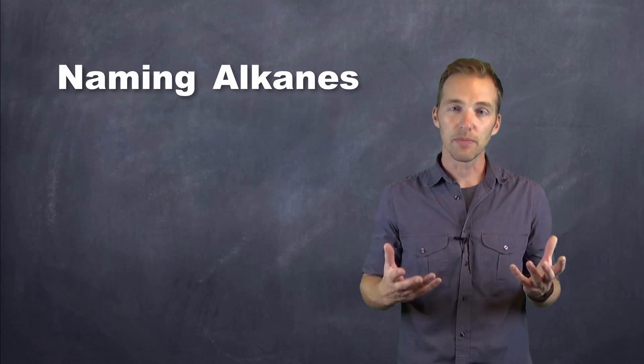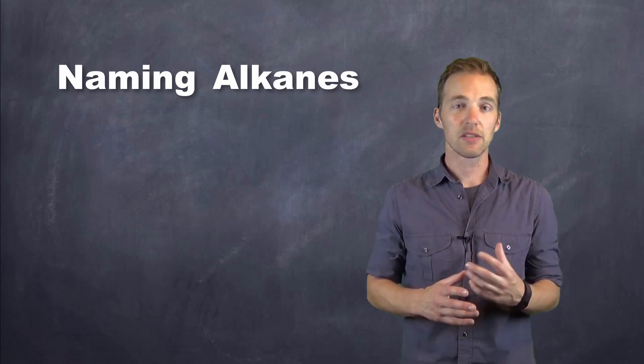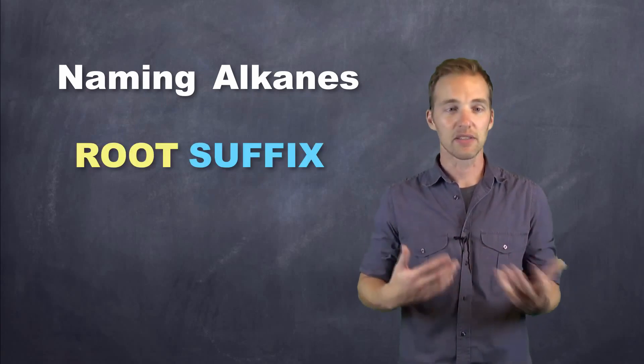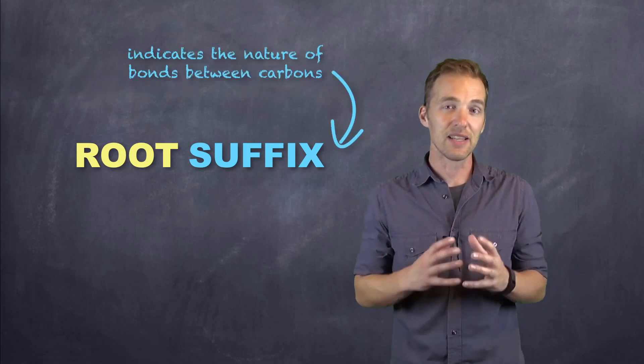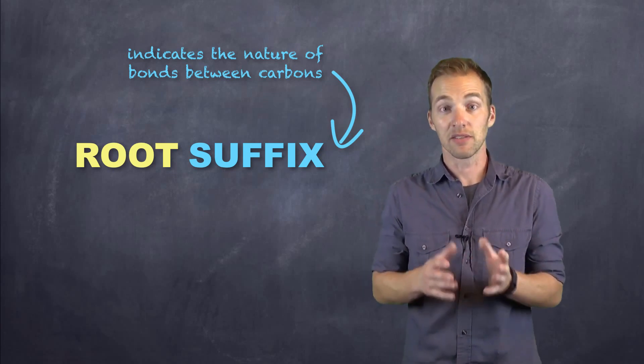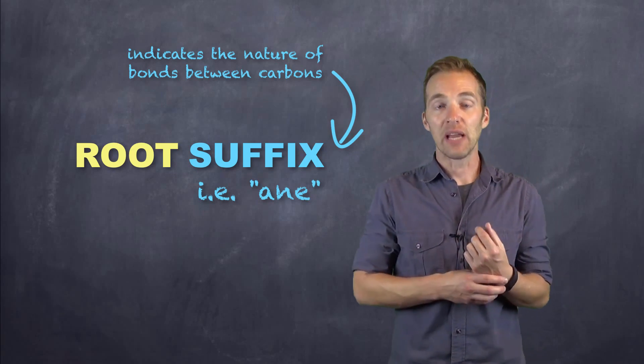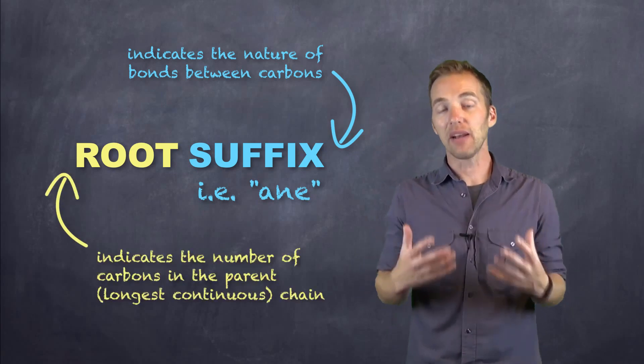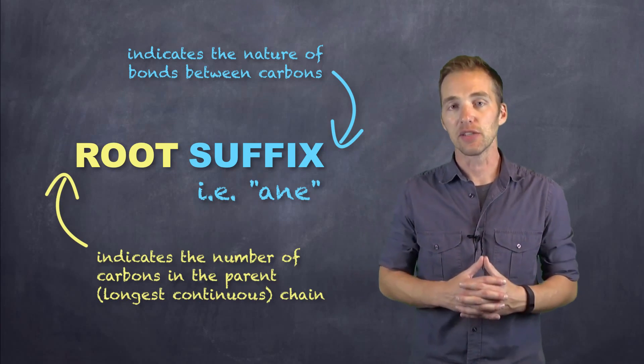There's a system that we go about for naming or drawing these structures, and it's based on a root and a suffix system. The suffix for us is going to indicate the nature of the bonds between them. The suffix for us is stemming from alkane, it's A-N-E. We have a root that is going to be dependent on the number of carbons that are bonded together in this particular chain.